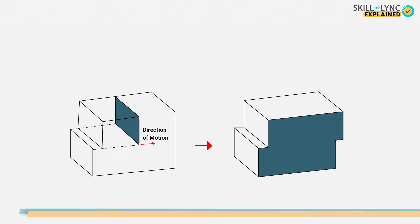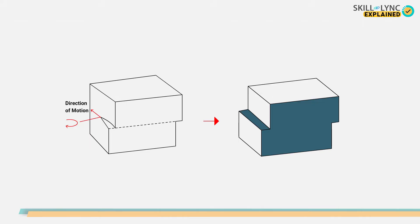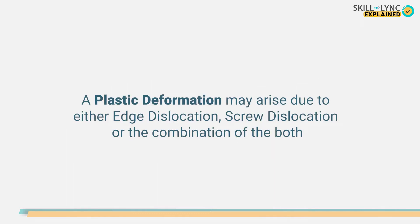The dislocated atoms generally move over the crystal during slip. If the dislocation arises due to the distortion existing along the extra half of atoms, then it is said to be edge dislocation. On the other hand, if the line of distortion due to applied force passes through the center of the atomic plane, then it is said to be screw dislocation. A plastic deformation may arise due to either edge dislocation, screw dislocation, or the combination of both.